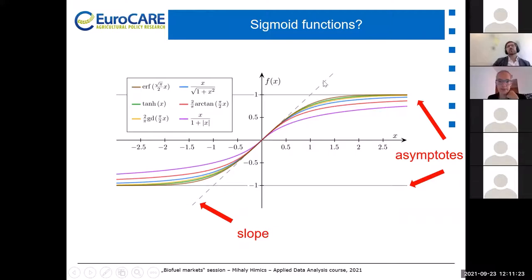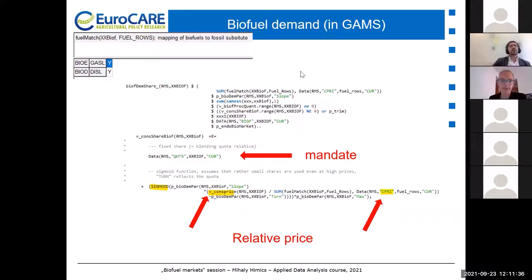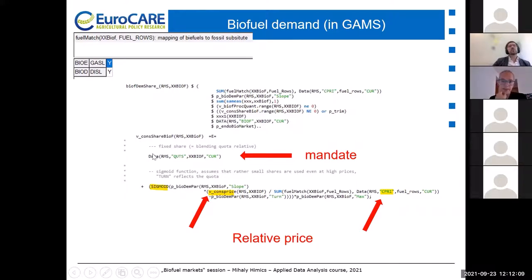The important parameters are a slope term and two asymptotes that define how wide the function should be. This is the biofuel share function. As usual, it is defined in a very general manner — the same equation applies for biodiesel and bioethanol depending on the set x_fuel we are talking about. We have a mandate parameter here which basically defines how high this function is shifted, along with all the different sigmoid function parameters which calibrate this function.